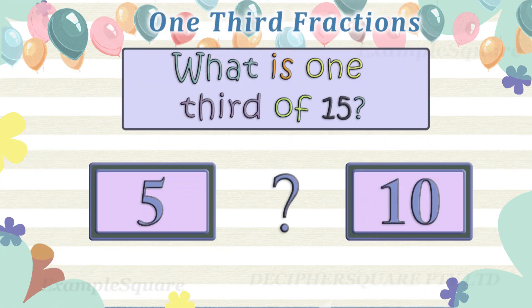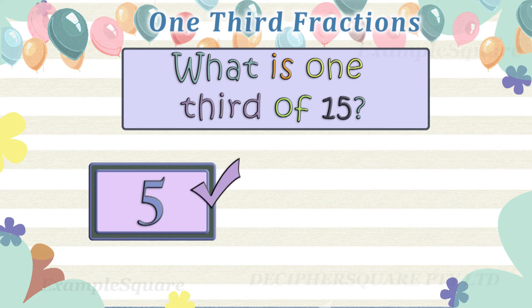What is one-third of fifteen? One-third of fifteen is five.